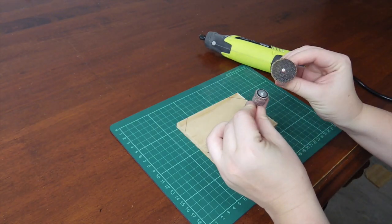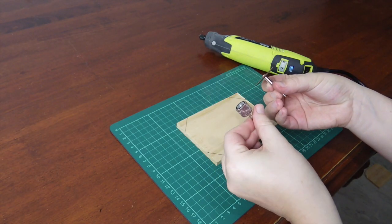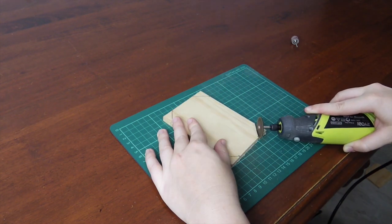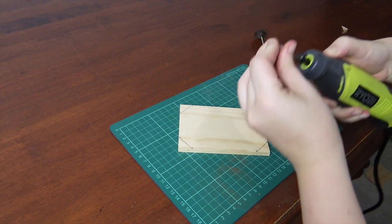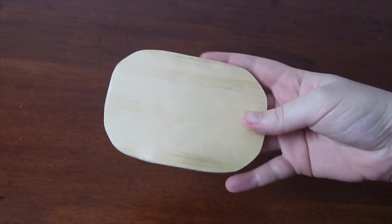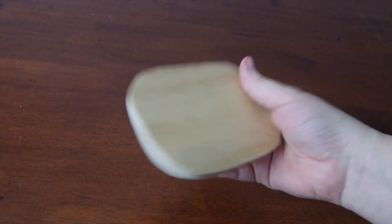Then I got out my dremel along with the cutting and sanding heads. Securing the cutting head into position, I went to work cutting along the line. Then I replaced the cutting head with a sanding head and sanded the edges into a curve. I repeated this process for the three other points.